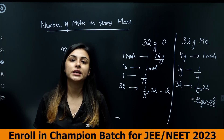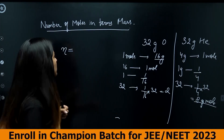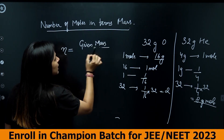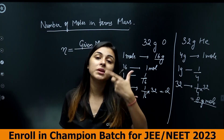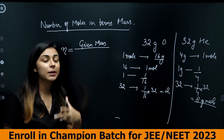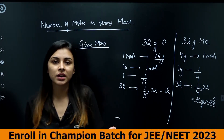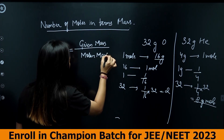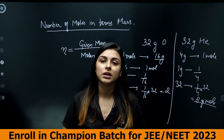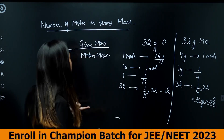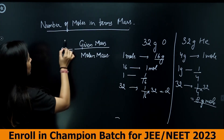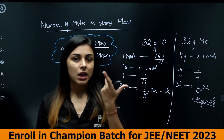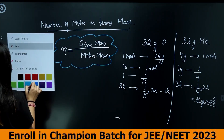So the formula for number of moles in terms of mass is: number of moles = given mass ÷ molar mass. The molar mass used must correspond to the specific substance being asked about. Let's understand this better by solving a question.